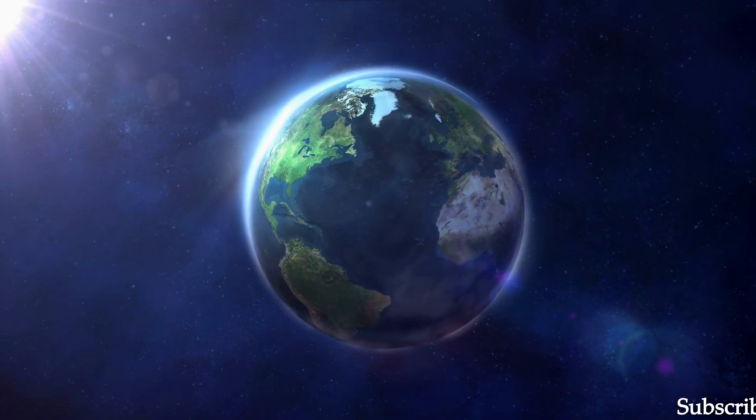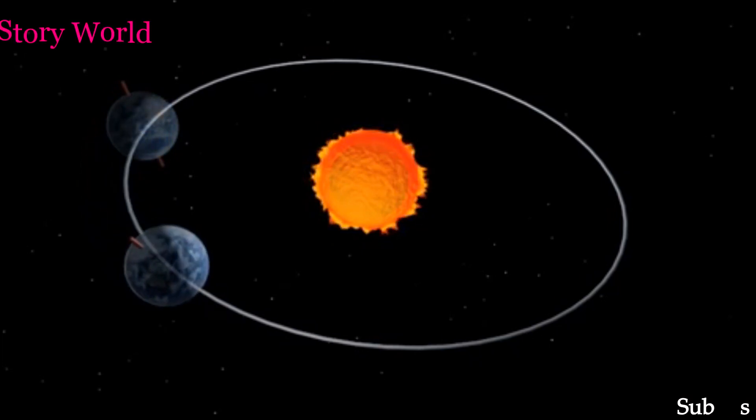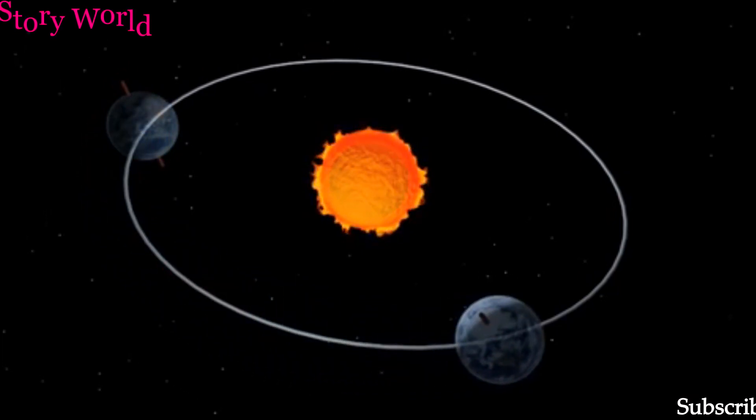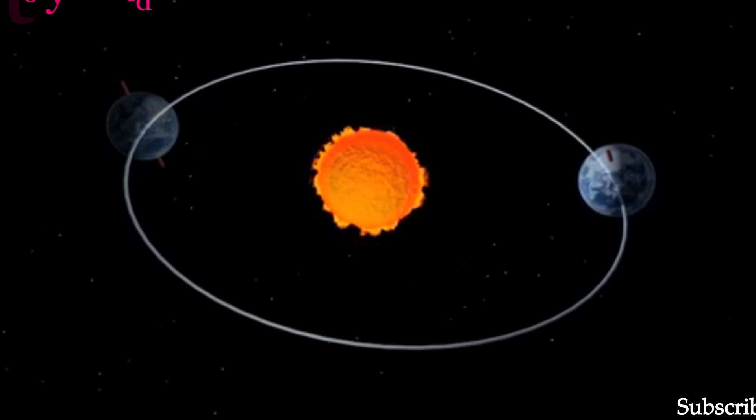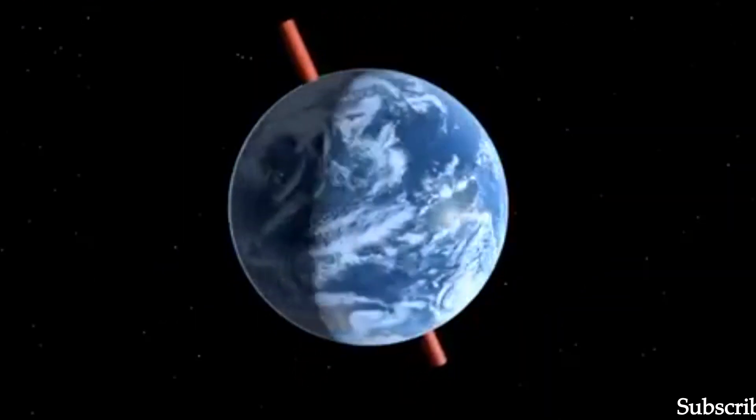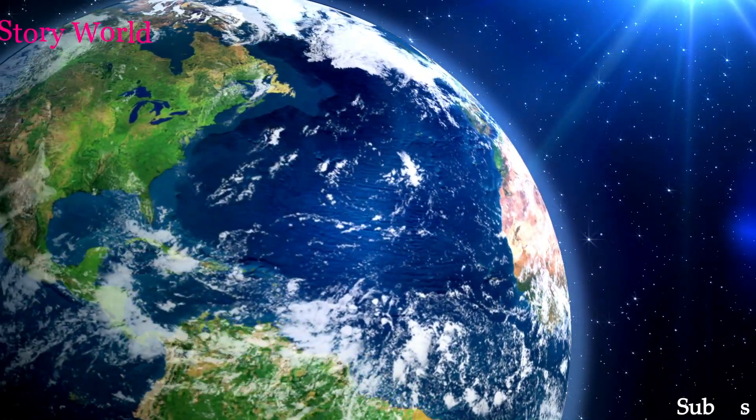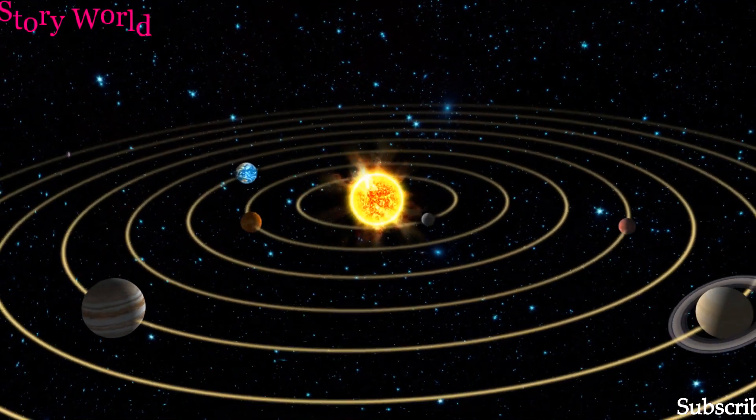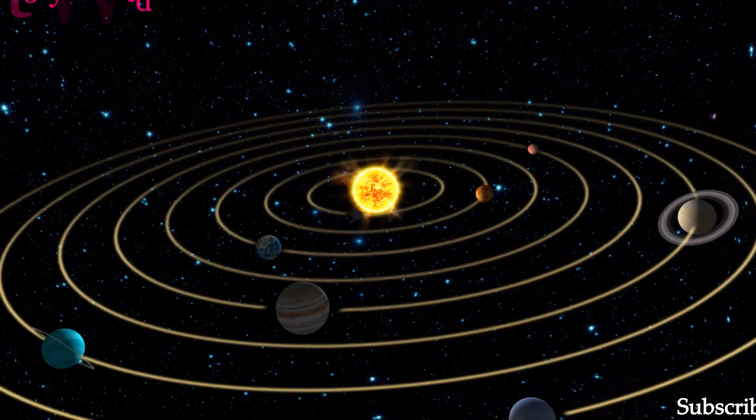During one year, Earth rotates about 366 times around its own axis. Earth is the third planet of the solar system orbiting the sun.